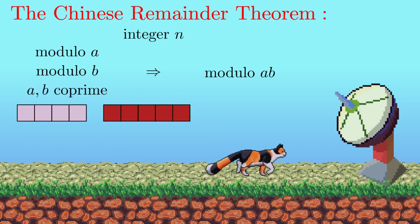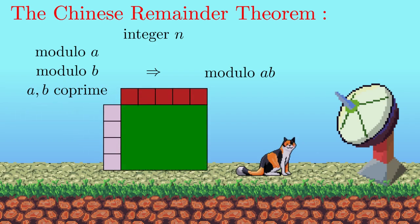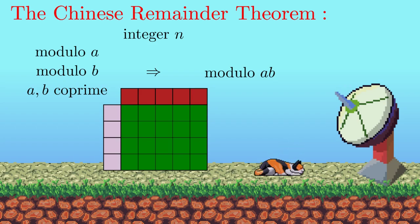So if we know n modulo 4 and modulo 5, then we know it modulo 20, which is 4 times 5. In general, any two distinct prime numbers are co-prime. So in our example from before, we had all the primes smaller than 20, so the Chinese Remainder Theorem holds. The proof of this theorem is quite elementary, and for those interested, I added a link in the description to some notes explaining the proof and its use in radar.